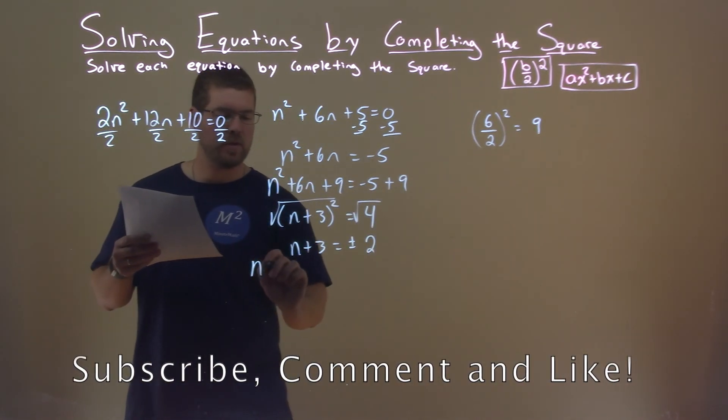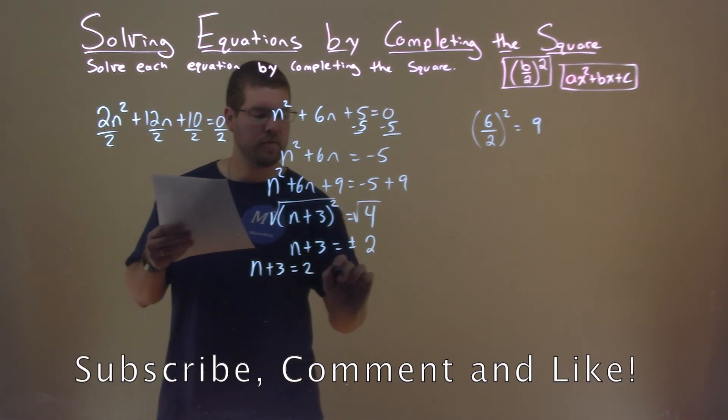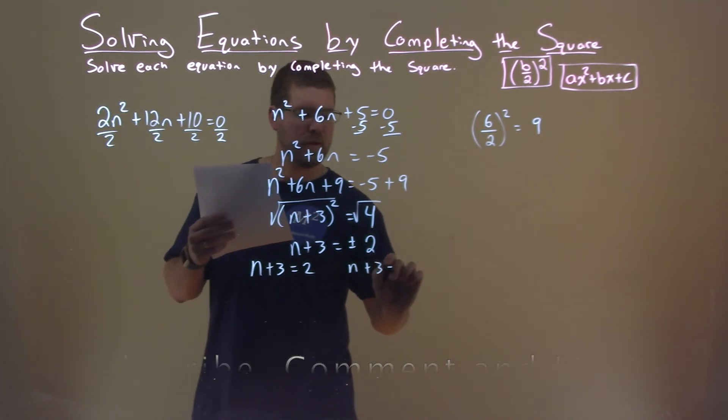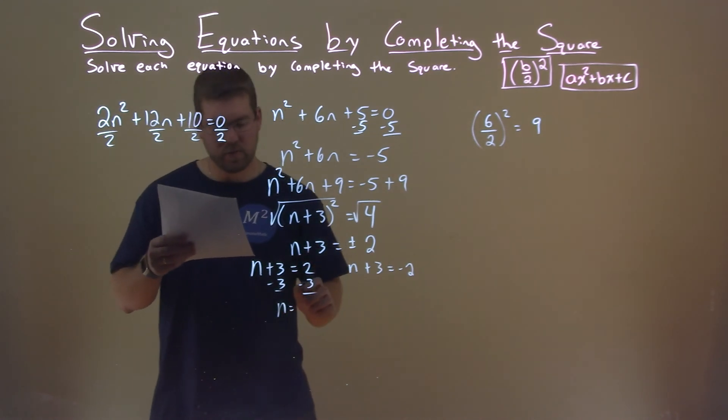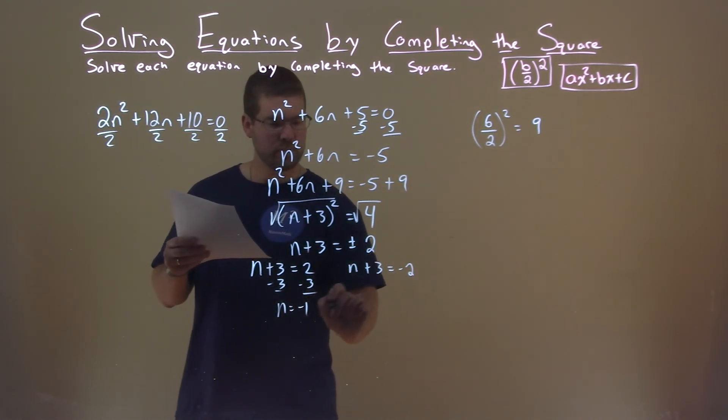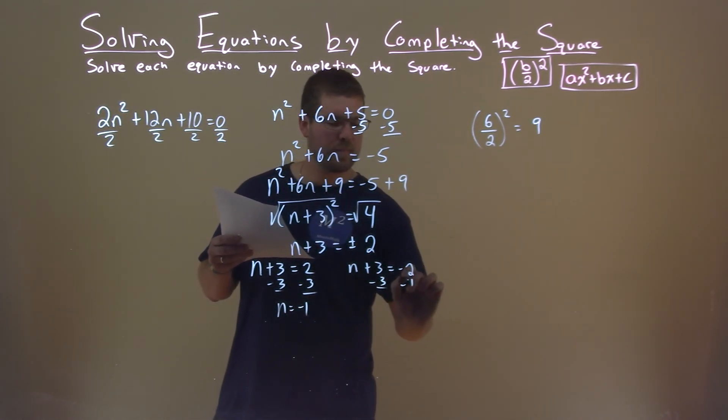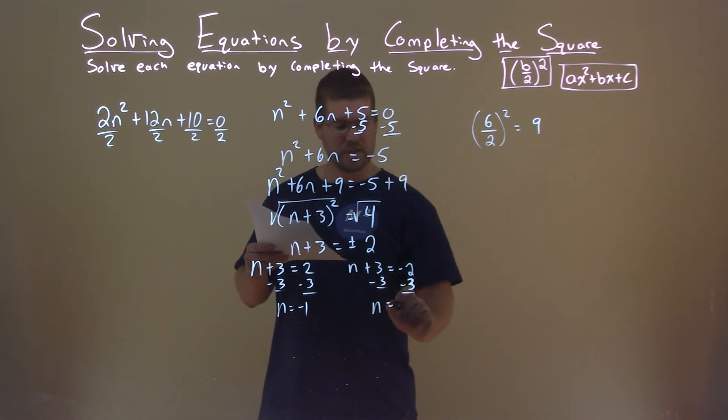We can break this down into two equations: n plus 3 equals positive 2, and n plus 3 equals negative 2. Subtract 3 from both sides. n equals 2 minus 3, which is negative 1. Do it again here, and n equals negative 2 minus 3, which is negative 5.